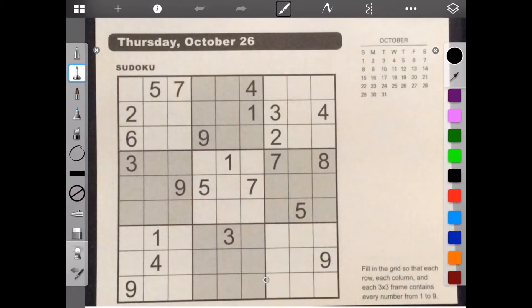Hello, welcome to Brain Games Calendar 2017. This is week 43, day 4. We have Sudoku. Let's begin. Fill in the grid so that each row, each column, and each 3x3 frame contains every number from 1 to 9. So let's do some intersections. This row, this column, and we're looking at that number. We can have 1 and 8 in that spot.